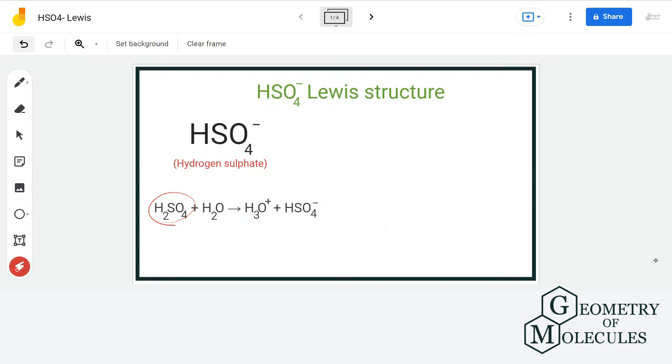It is formed when sulfuric acid reacts with water and the chemical compounds that contain HSO4- ion are known as hydrogen sulfates.